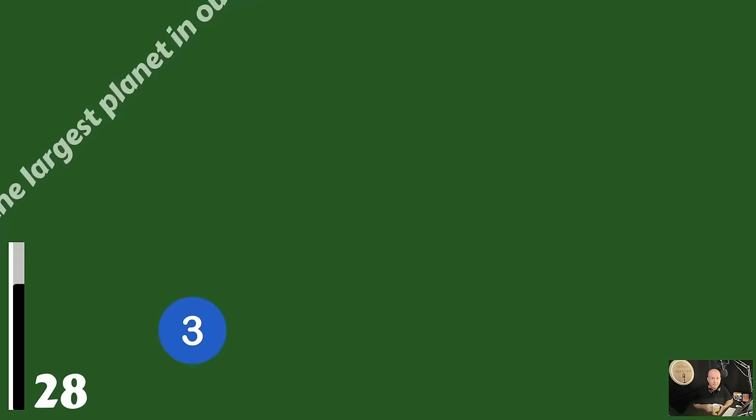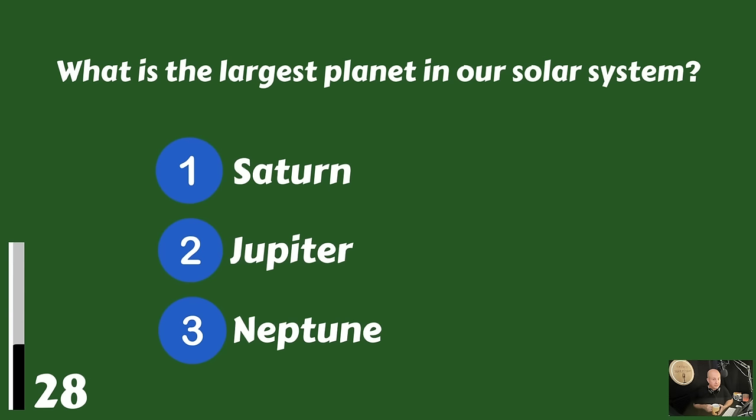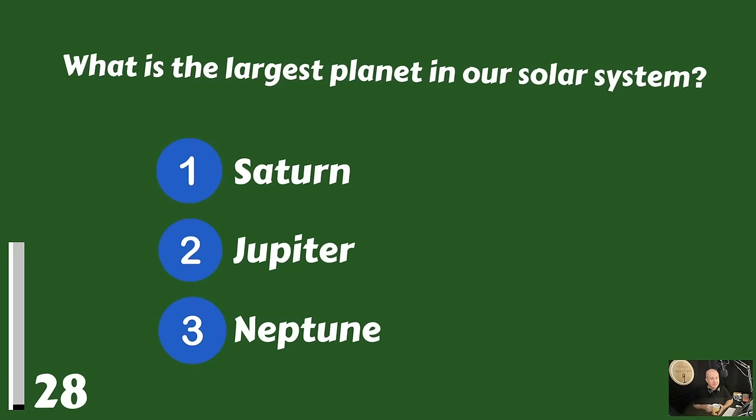What is the largest planet in our solar system? Is the largest one Saturn, is it Jupiter, or is it Neptune? They're all pretty large, but the largest of them all is Jupiter.